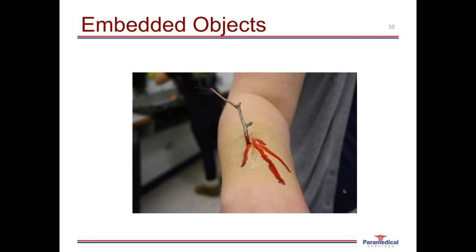When dealing with any type of embedded object, never remove it from the person as this can cause more damage and more bleeding. The best thing to do is apply pads and bandages around the area to support the embedded object so that it is stable and doesn't get knocked out. You can make use of a doughnut bandage to provide stability, or pack roller bandages around the area to keep it stable.